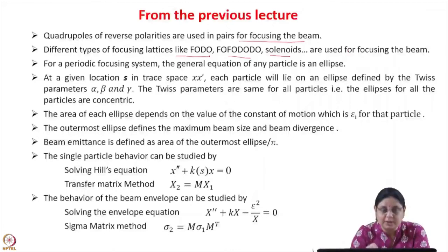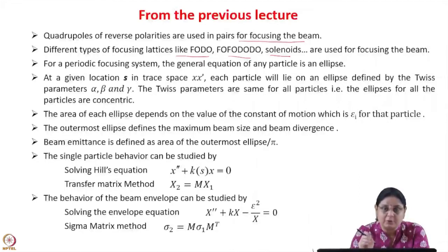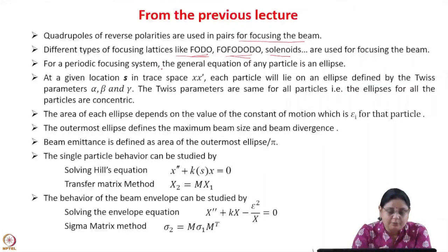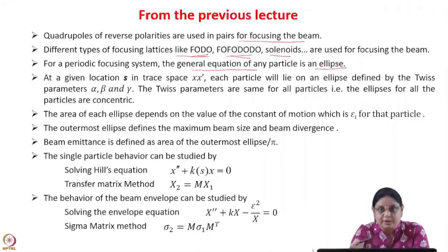Inside the drift tube linac there are drift tubes, and in these drift tubes quadrupole magnets are put for focusing the beam. They could be arranged in any configuration like FODO, FOFODODO, or even a FOFODODO configuration. For a periodic focusing system, the general equation of any particle is an ellipse, as derived in the previous lecture.